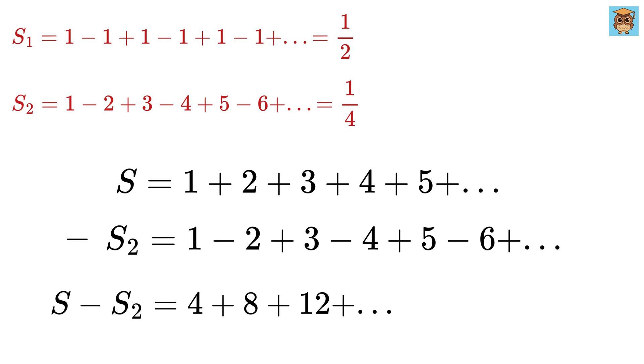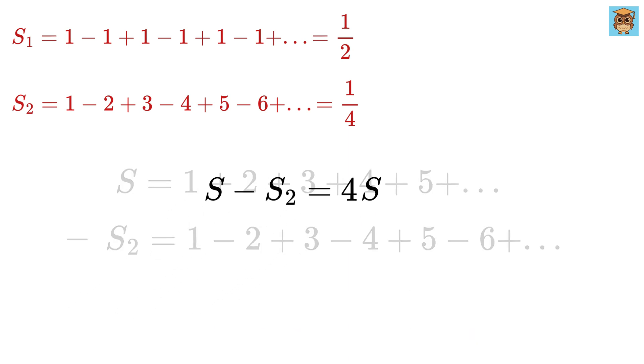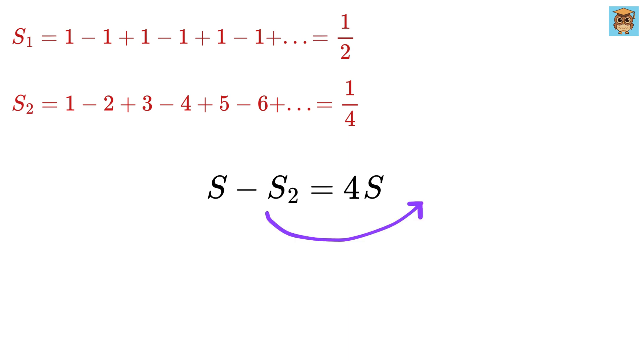Take 4 as common from this to get 4 times 1 plus 2 plus 3 plus 4, and so on. But this is none other than S. So, we get S minus S2 equals 4S, or take S2 here, and 4S here to get minus 3S equals S2, or S equals minus 1 over 3 times S2.